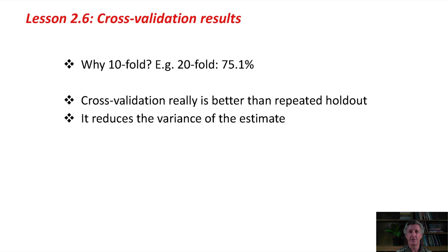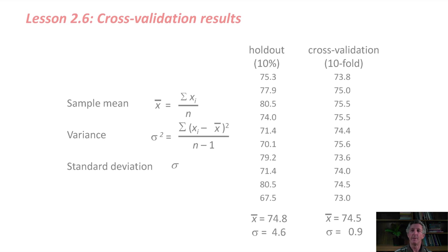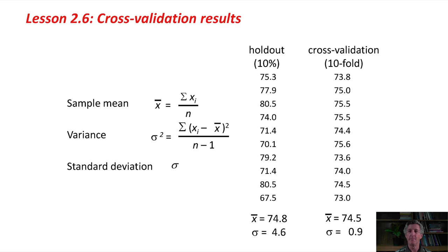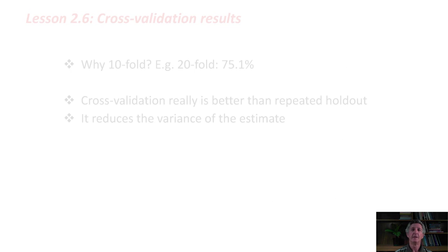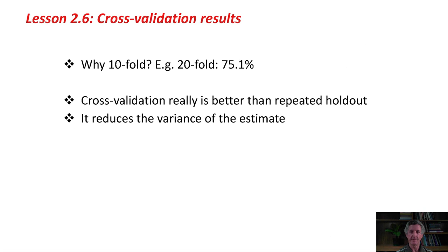We've shown in this lesson that cross-validation really is better than repeated holdout. Remember, on the last slide, we found that we got about the same mean for repeated holdout for cross-validation, but we got a much smaller variance for cross-validation. We know that the evaluation of this machine learning method, J48, on this dataset, diabetes, we get 74.5% accuracy, probably somewhere between 73.5% and 75.5%. That is actually substantially larger than the baseline, so J48 is doing something for us better than the baseline. Cross-validation reduces the variance of the estimate.